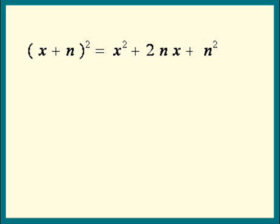What I want you to do now is look at that last term, n squared, and think. How do we get n squared from the 2n? Then, you've got it. Just divide the 2n by 2 and then square it.